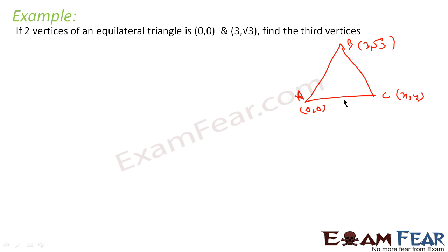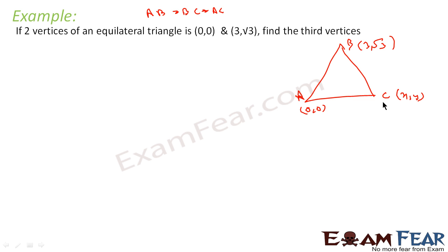We know that all the distances are the same — that is, AB is equal to BC is equal to AC in an equilateral triangle. First, we can find the length of AB because those points are given, and then find AC and BC in terms of X and Y. So we have two equations, two variables, and we will get the answer.